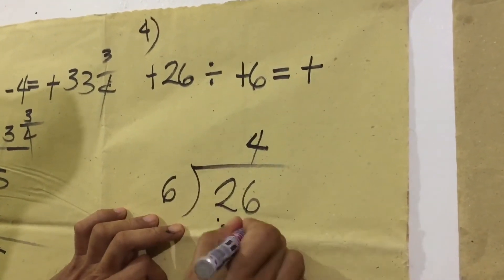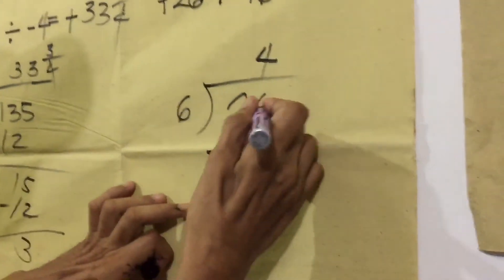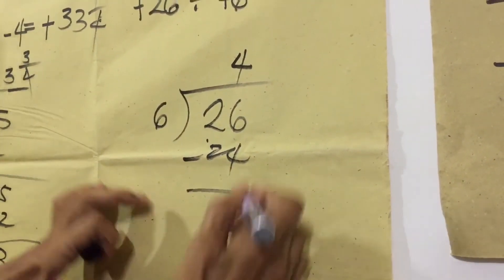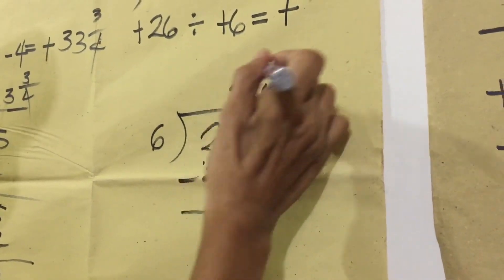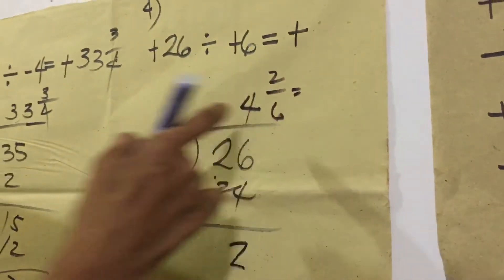Sometimes, we have 24 minus 6 minus 4 is 2. Now, we have 2 over 6. This time, since 2 over 6, piti pa maridus.